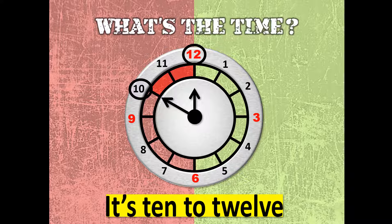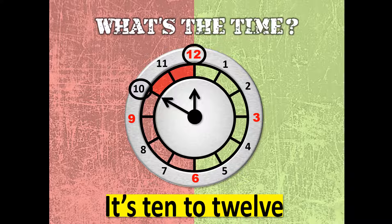Look at this one. It's ten to twelve. Why ten? Five, ten — it means ten minutes more and it will become twelve o'clock. The correct time here, if you read the clock, it's eleven fifty. So we say it's ten to twelve because ten minutes more it will become twelve o'clock. That's why we read the clock as ten to twelve.